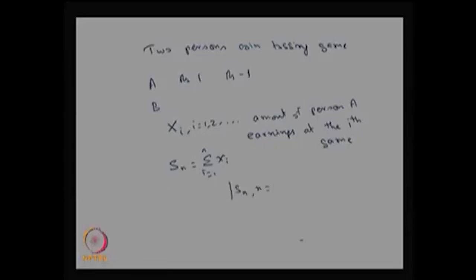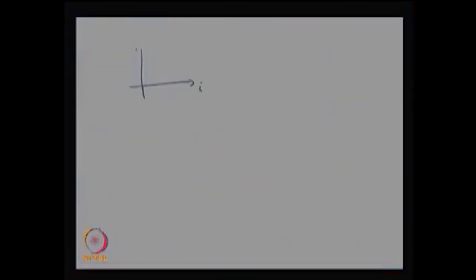S_n forms a simple random walk where X_i's take integer values 1 or minus 1 — with probability p taking value 1, and probability 1 minus p taking value minus 1. Looking at the sample path of X_i: if X1 takes value 1 it is plotted at 1; if X2 takes value minus 1 it goes down; if X3 takes value minus 1 it continues down; if X4 takes value 1 it goes back up. This is the sample path of X_i over i.